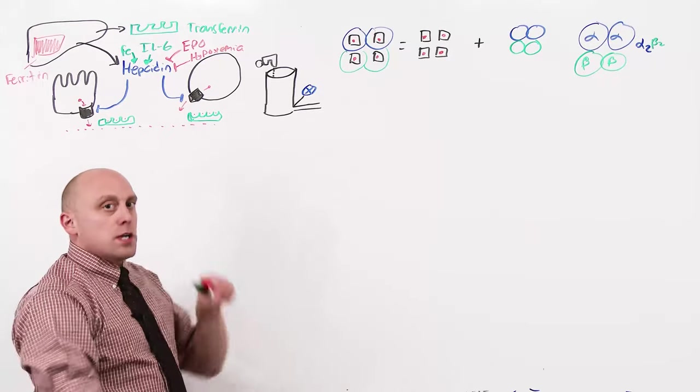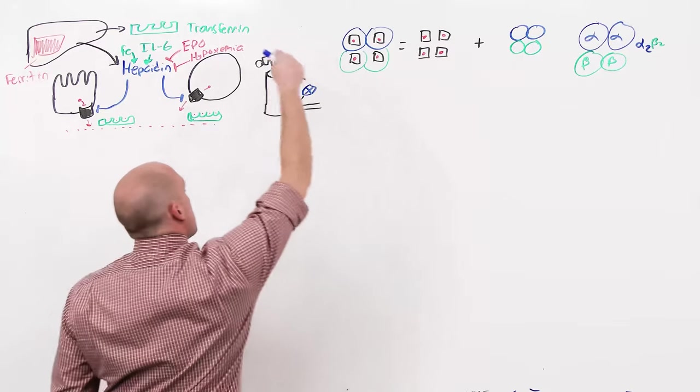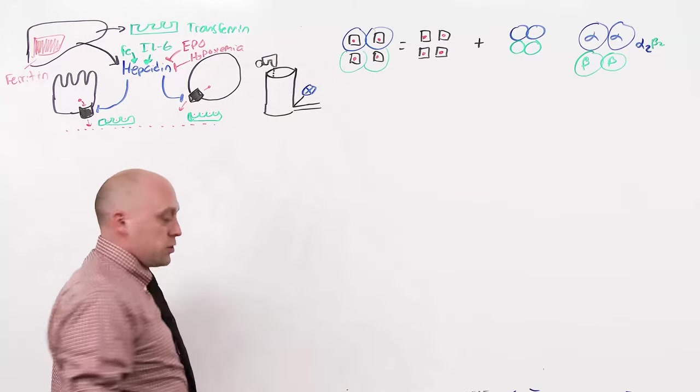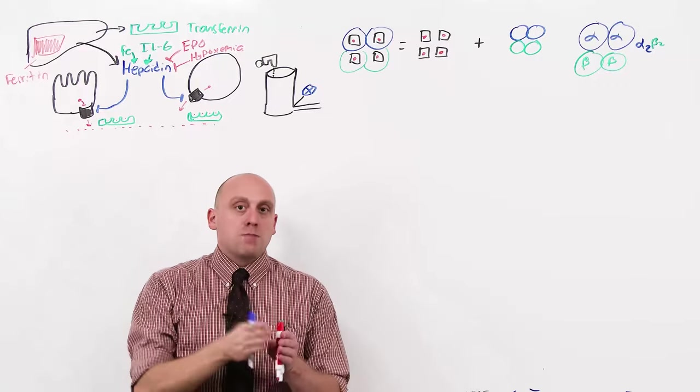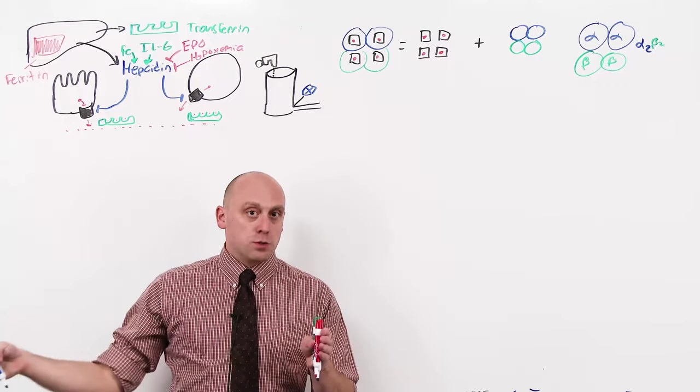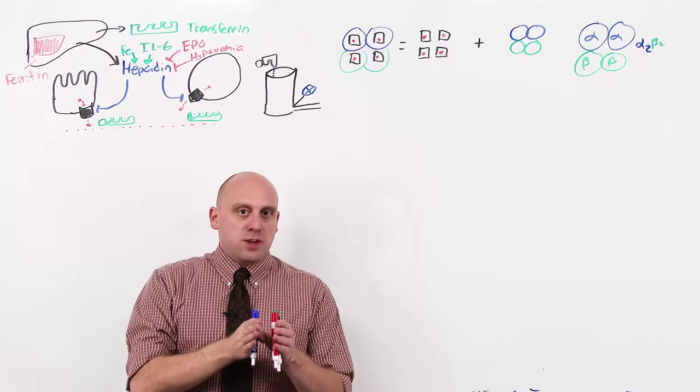Hepcidin is low, counterclockwise, the valve opens, and all the iron stores rush out. The amount of iron in doesn't change. Now the amount of iron in is dependent on hepcidin, but relative to the amount of red blood cells you can lose in bleeding, or relative to the demand of the marrow, it's essentially fixed.